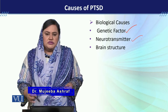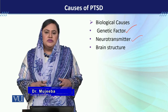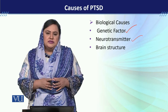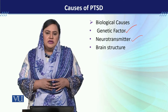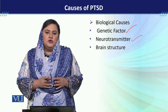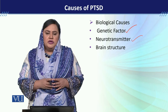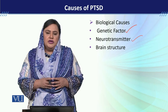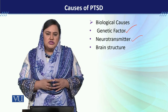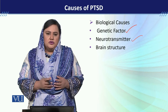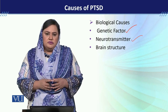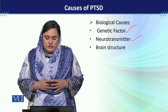The next factor is neurotransmitters. It is said that the serotonin level is disturbed, the dopamine level is high, and GABA — which is involved in physiological reactions — has a disturbed level as well.